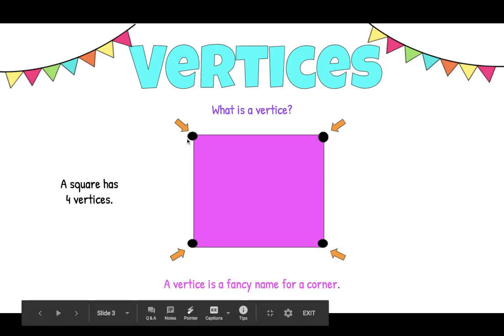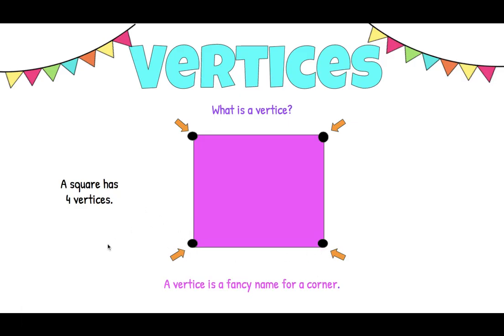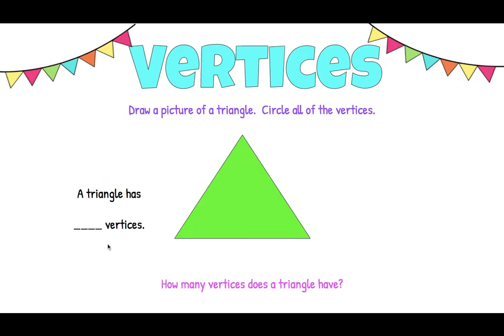This square has one, two, three, four vertices. Now when we're looking at this triangle, look at those vertices. How many do you count? A triangle has three vertices.